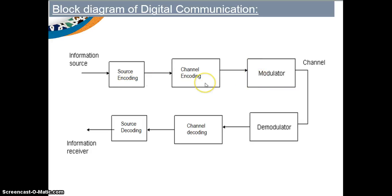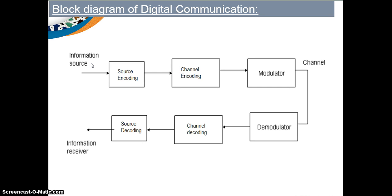Then the channel, where noise gets added, and then the receiver, which consists of the demodulator, channel decoding, source decoding, and information receiver. The information source can be analog or digital in nature. For example, analog information sources include a microphone activated by speech or a TV camera scanning a scene — these are continuous amplitude or analog signals. Digital information sources include a teletype or the numerical output of a computer, consisting of a sequence of discrete symbols or letters.